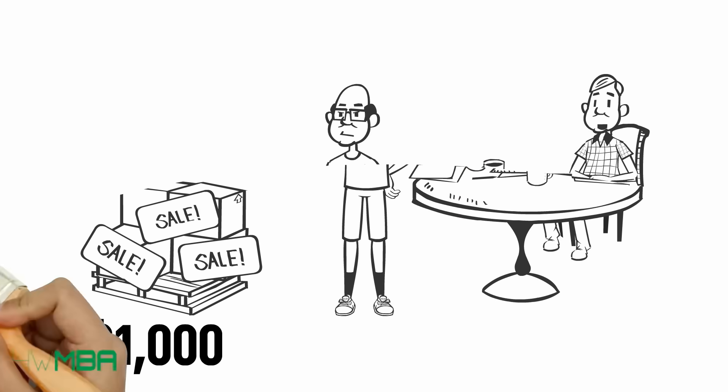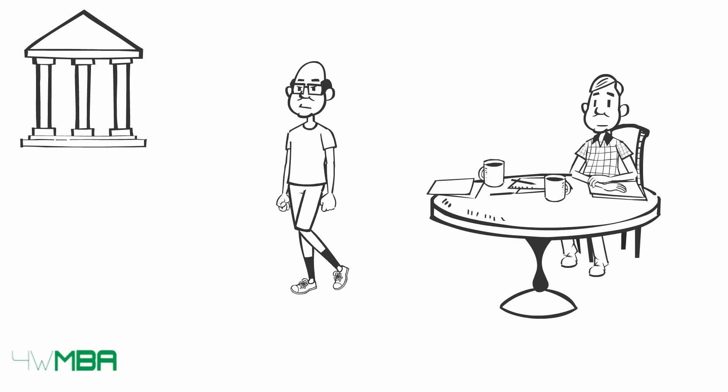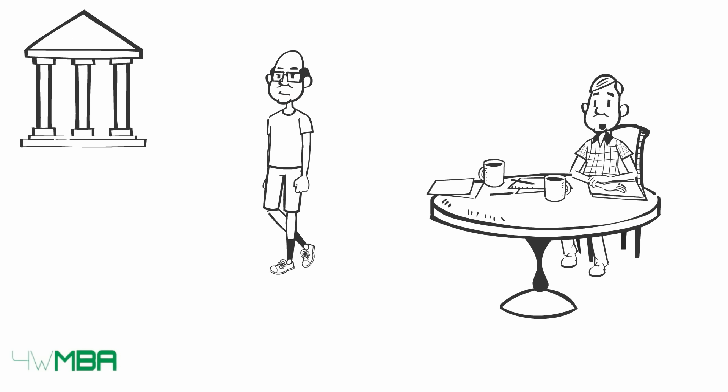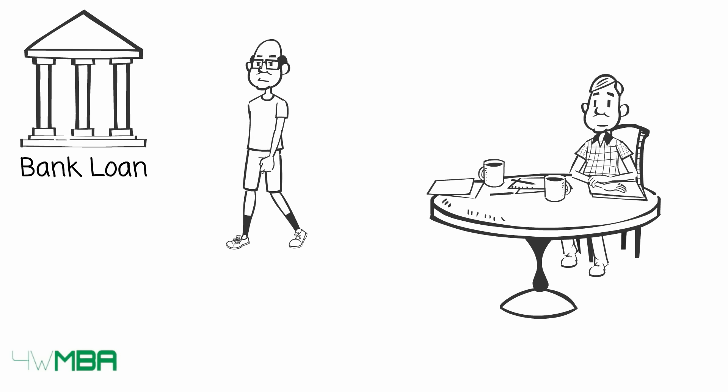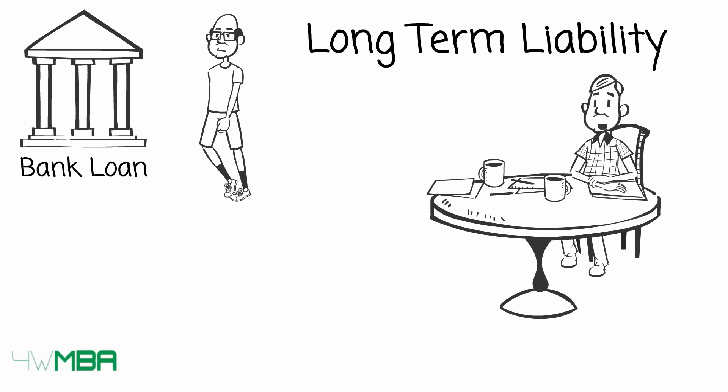Jim goes to the bank to ask for a long-term loan. The bank gives Jim 50,000 dollars. This will generate a bank loan showed under long-term liability on Jim's balance sheet.